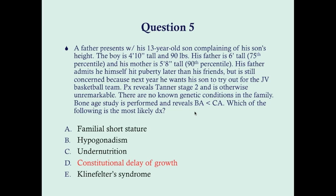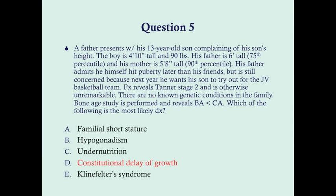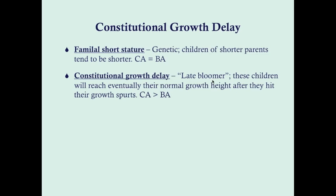To summarize: in familial short stature, chronologic age equals bone age — the bones are tracking consistently with age but the child will simply be a short adult like their parents. In constitutional growth delay, these are late bloomers — chronologic age is greater than bone age. There is often a genetic pattern; if a parent hit puberty later than peers, the child likely will too. The child will eventually reach their normal height after their growth spurt, which just happens to come a little bit later.